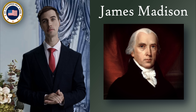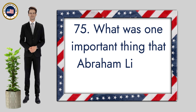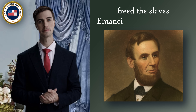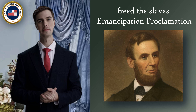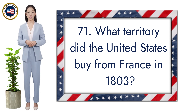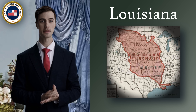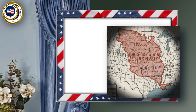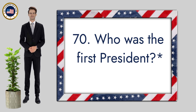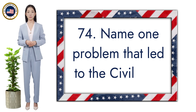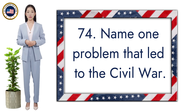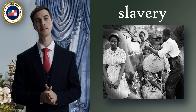What does the President's Cabinet do? Advises the President. The Federalist Papers supported the passage of the U.S. Constitution. Name one of the writers. James Madison. What was one important thing that Abraham Lincoln did? Freed the slaves — Emancipation Proclamation. What territory did the United States buy from France in 1803? Louisiana.